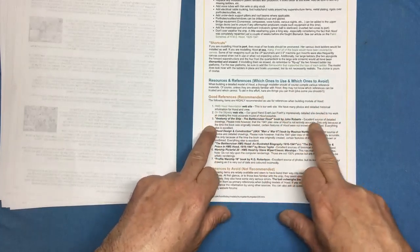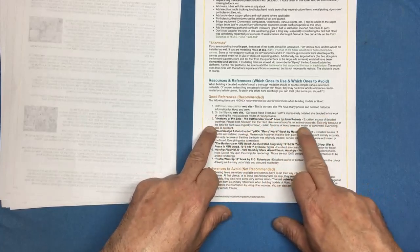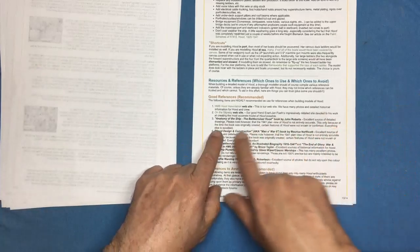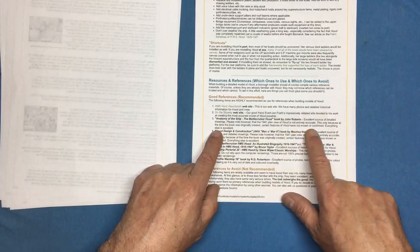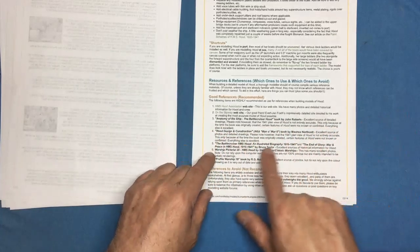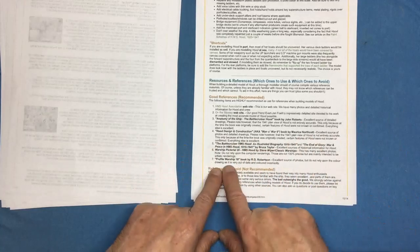Anatomy of the Ship: excellent source of detailed drawings. Please note however that the 1941 plan of Hood is not entirely accurate. You see what I mean? They're absolutely brilliant. It's only because at the time the book was originally created, certain features of Hood were not known or confirmed. Everything else is excellent.